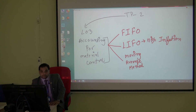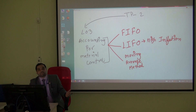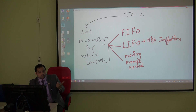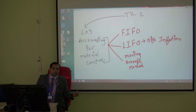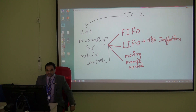Moving average mathematics means we normally calculate the value of our material, whatever we have, no matter if it is new or old. Whatever we are holding, we calculate the average value — we take the average of that value to estimate the actual value of the material. So we have three different methods here.